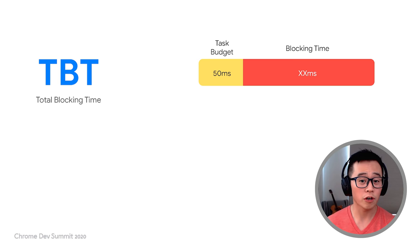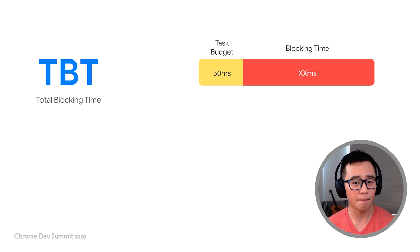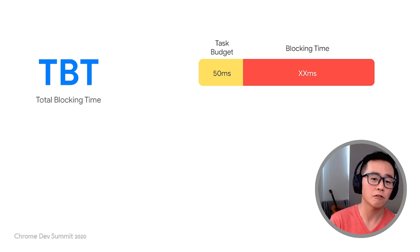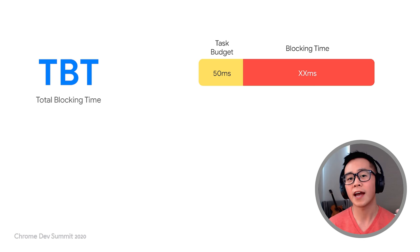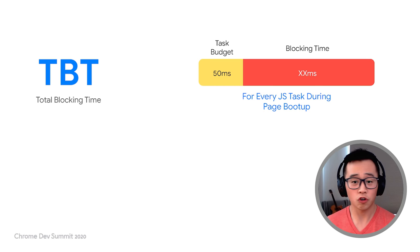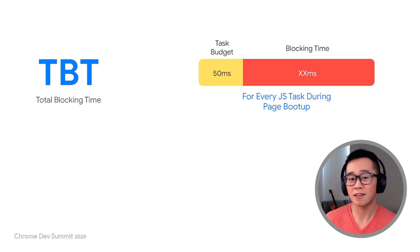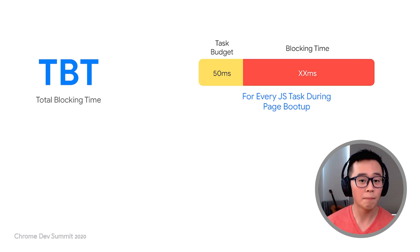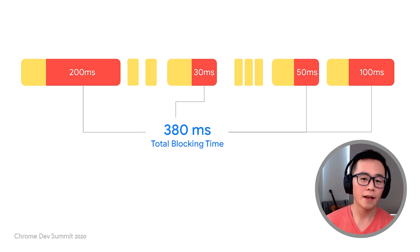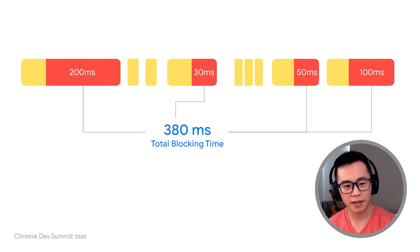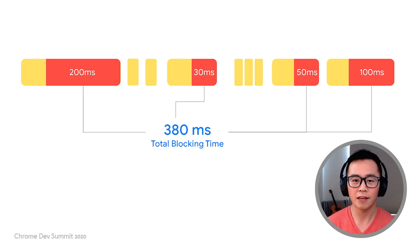Total Blocking Time describes the root cause of a slow first input delay, which is long blocking tasks. We set a budget of 50 milliseconds for each task, but if you go beyond that amount, every millisecond after that is considered potential blocking time. You get a free 50 milliseconds because that gives the browser and main thread enough time to do some work and reliably react visually to user input. Since user input could happen at any time — hitting the first task or the 50th — it doesn't make sense to measure blocking time for just one task. So we look at all tasks during the page load timeline and sum all the blocking times, which is why it's called Total Blocking Time.